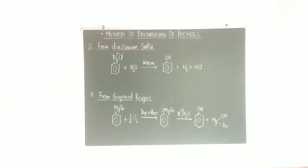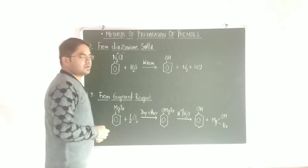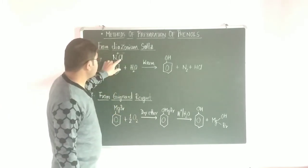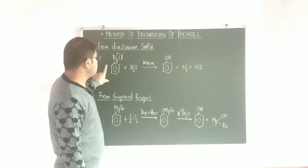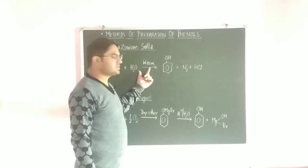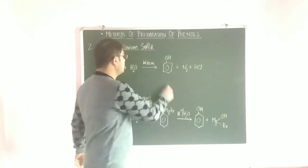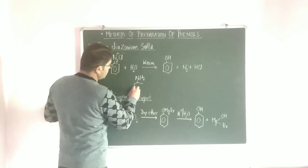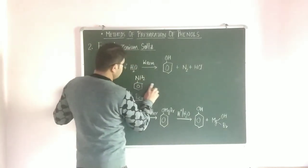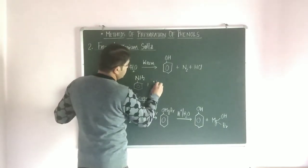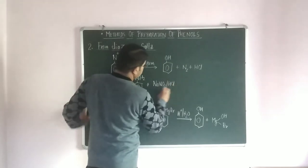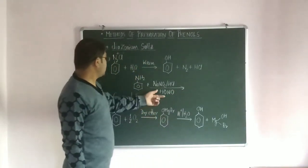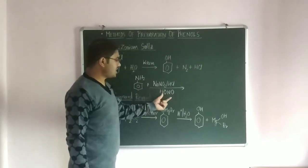The next method is from diazonium salts. Phenol is prepared from benzene diazonium salt — N2Cl on the ring — and when benzene diazonium salt is warmed with water, it gives phenol. N2Cl is formed when aniline, that is the aromatic amine NH2, is treated with the combination of NaNO2 and HCl, or simply HNO2 (nitrous acid).